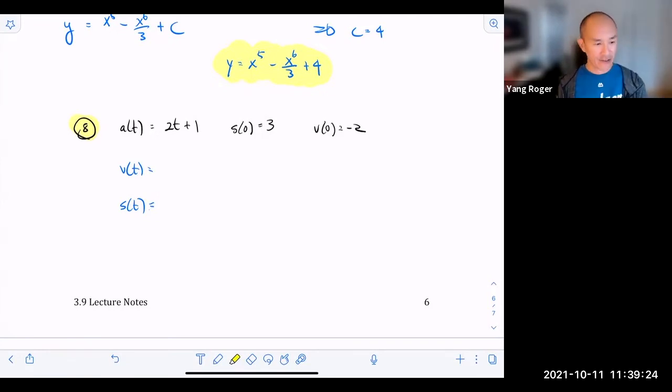So let's find the antiderivative of this guy. The antiderivative of two T is two T squared over two plus the antiderivative of one is just T plus C. Right? So let me simplify that. That's going to give us T squared plus T plus C.